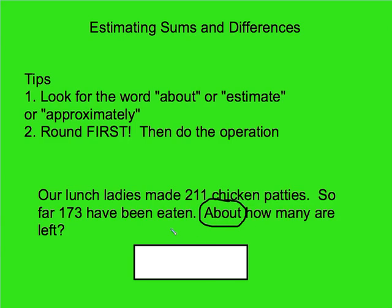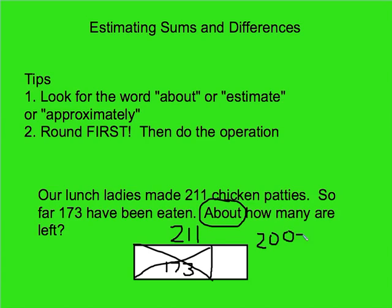I'm going to visualize this problem to know which operation to choose. There were 211 chicken patties total, and 173 — part of them — have been eaten. It helps to put an X through that to show what's gone. Since I know a total and a part, I know I'm going to be subtracting. Now I just need to round. Rounding to the nearest 100: 211 is close to 200, and 173 is close to 200. But 200 minus 200 means there are approximately no chicken patties left — that doesn't make sense. Let's try rounding to the nearest ten.